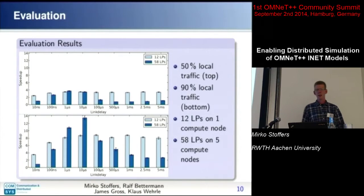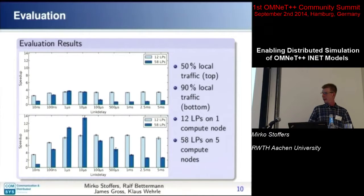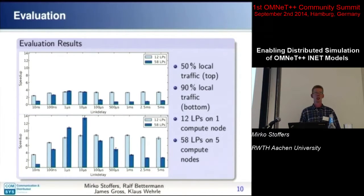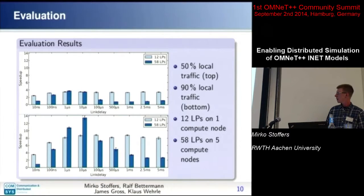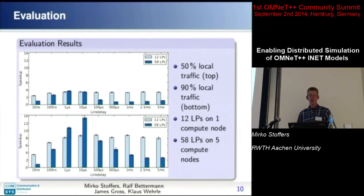We don't have a 100% fitting explanation for the degradation, but we guess it's because as the link delay increases, routers at the gateways have to queue more packets, and as queues grow the simulation gets slower. With just 12 LPs on a single computing node, we don't see degradation — just saturation. This effect is much stronger in the configuration with different machines, so it seems to be an issue with MPI and transmitting packets from large queues to remote LPs.